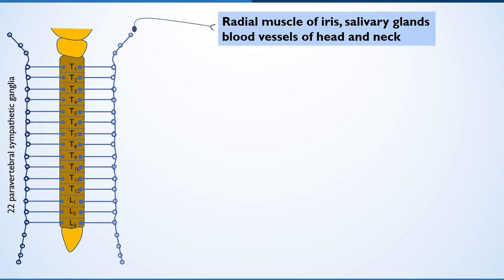As shown in the figure, these 22 ganglia are placed bilaterally from cervical to sacral vertebra, but the white rami of the thoracic and lumbar regions communicate with them only. The top three cervical ganglia and last four sacral ganglia are not communicated with the white rami. However, preganglionic fibers run up to the ganglia in cervical or sacral regions and make synapse with postganglionic neurons. Through cervical ganglia, the sympathetic innervation goes to the radial muscle of the iris, salivary glands, and blood vessels of the head and neck.